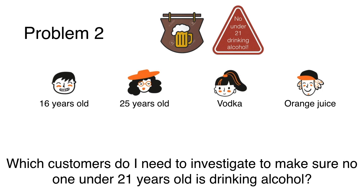And the answer is, well let's look at them one by one. The first one is 16, so we need to check their drink and make sure that they're not drinking alcohol. The second one is 25, she can drink whatever she wants. The third one is drinking vodka, so we should check her age to make sure she's not underage. And the fourth one is drinking juice, so it doesn't matter what age they have. That was much easier, right?